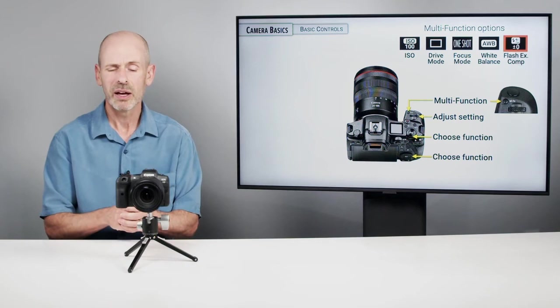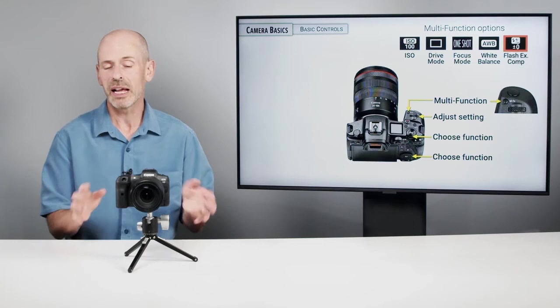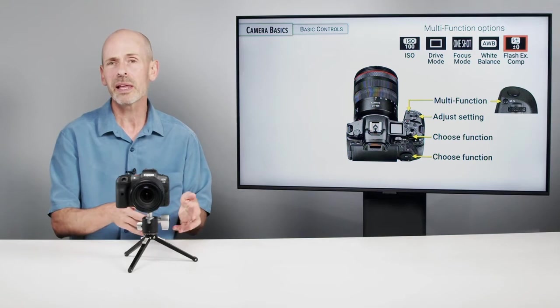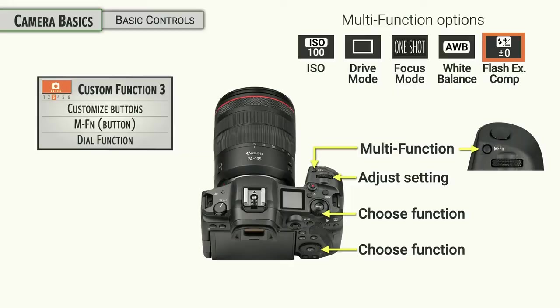And so for a lot of long time Canon users like myself, there used to be an ISO button on the top of the camera. You just simply press that, turn the dial and change your ISO. And that was great. And that's kind of the way that you can leave this set up. If ISO is the one thing that you change all the time, you hit that button, turn the dial and you make your change. And only every once in a while do you change the other ones. You can go to that. But these are customizable and I'll talk more about that as we get later in the class.